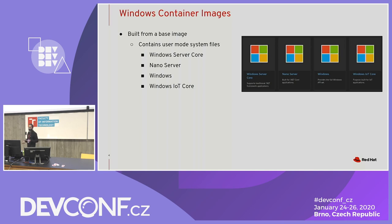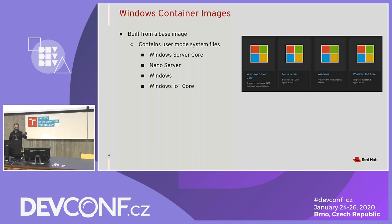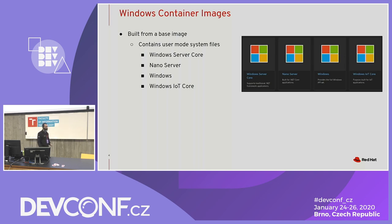How do you pick one of these base images? It basically depends on your application. If you have a traditional .NET application, you'd use Windows Server Core. If you have a more complex application requiring the full set of Windows APIs, you'd pick the Windows version of the container image. They also have something called IoT Core for writing IoT apps.